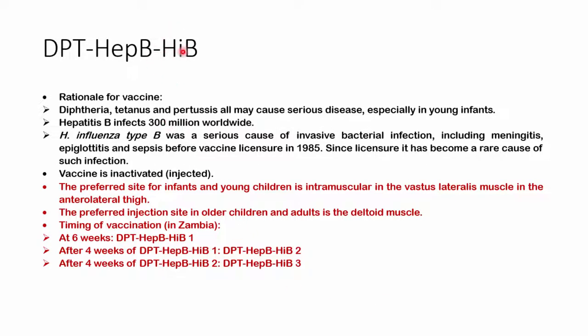We also give DPT-HepB-Hib. Diphtheria, pertussis, and tetanus cause serious disease worldwide, especially in infants. Hepatitis B infects over 300 million people worldwide. Haemophilus influenzae type B was a major cause of meningitis, epiglottitis, and sepsis before antibiotics and before vaccination was instituted in 1985. This vaccine is inactivated and injected intramuscularly — in the vastus lateralis in infants and the deltoid in older children and adults. The schedule is six weeks for the first dose, 10 weeks for the second, and 14 weeks for the third.